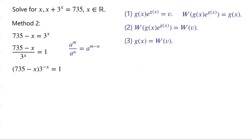735 minus x times 3 to the power of negative x equals 1. Multiply the equation by 3 to the power of 735.